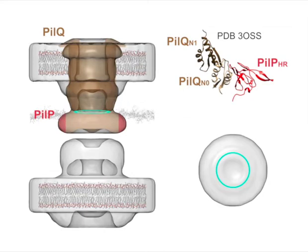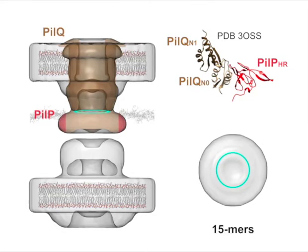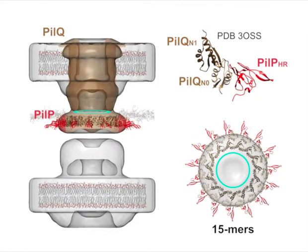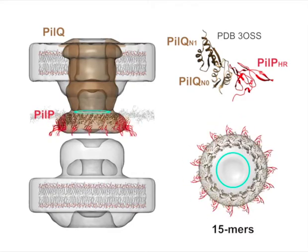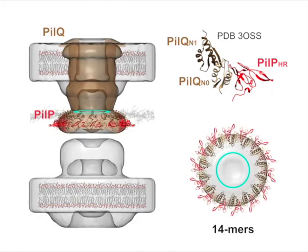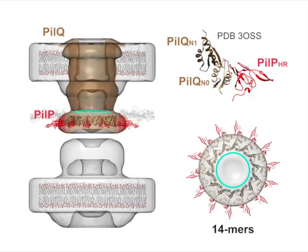Previously, PLQ homologues from different species have been reported to form channels with different oligomeric states, including 15-mers, 14-mers, and 12-mers. In order to investigate the oligomeric state of PLQ in Myxococcus xanthus, we used the SIMDOC software to generate 50 different plausible candidate ring configurations for each oligomeric state, and then examined their fit within the density.